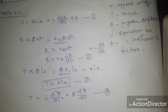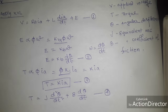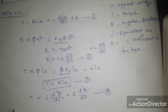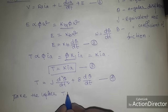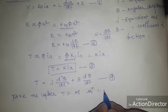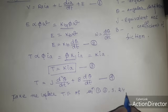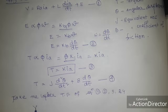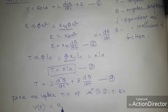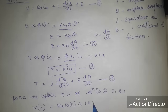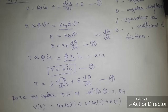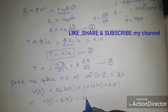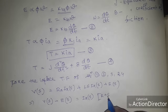The next step is to take the Laplace transform of all four equations. Taking the Laplace transform of equations 1, 2, 3, and 4: From equation 1, we get V(s) minus E(s) equals IA(s) times (RA plus s·LA).